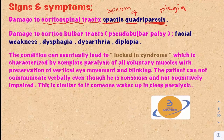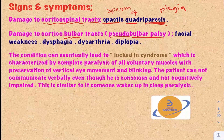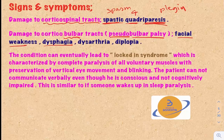Damage to the corticobulbar tracts causes what's called pseudobulbar palsy. The corticobulbar tracts are the fibers that supply the cranial nerve nuclei. Pseudobulbar palsy means upper motor neuron lesion of the cranial nerve nuclei. This is in contrast to bulbar palsy, which is lower motor neuron lesion of the cranial nerve nuclei. This will result in facial weakness, dysphagia (difficulty in eating), dysarthria (difficulty in talking or phonation), and diplopia (double vision).